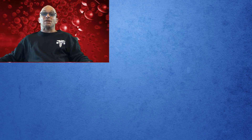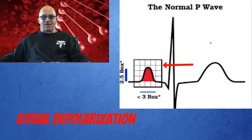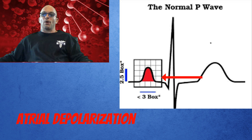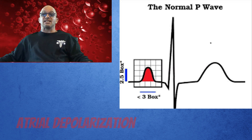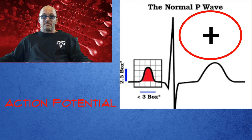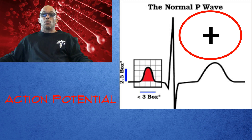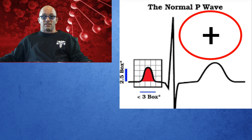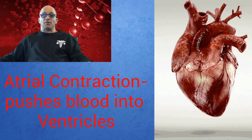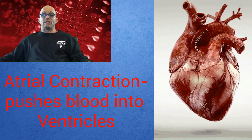We shall now begin, and we start with the P wave, which tells us that the atria are depolarized. The inside of the cell becomes more positive and action potential takes place, which is atrial contraction, where the upper chambers force blood into the lower ventricles.